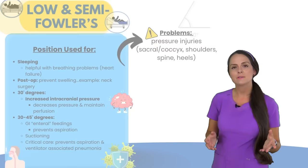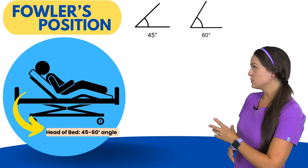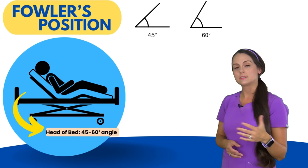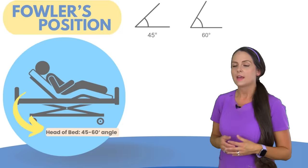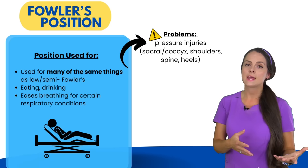Next we have the Fowler's position — just called Fowler's with no low, semi, or high in front of it. The head of the bed is between 45 to 60 degrees, with the patient resting on their back and knees either flexed or extended. This position is used for many of the same things as low and semi Fowler's, such as eating, drinking, and easing breathing with certain respiratory problems. The pressure injury risks are also the same as low and semi Fowler's.